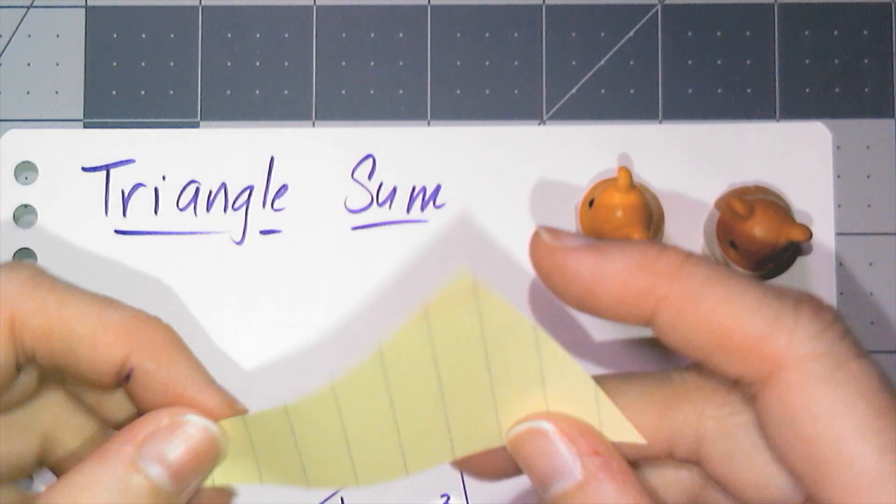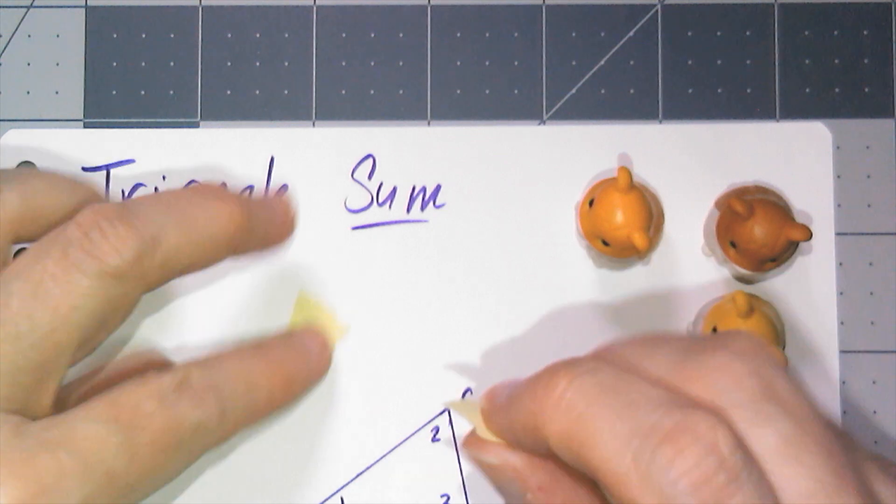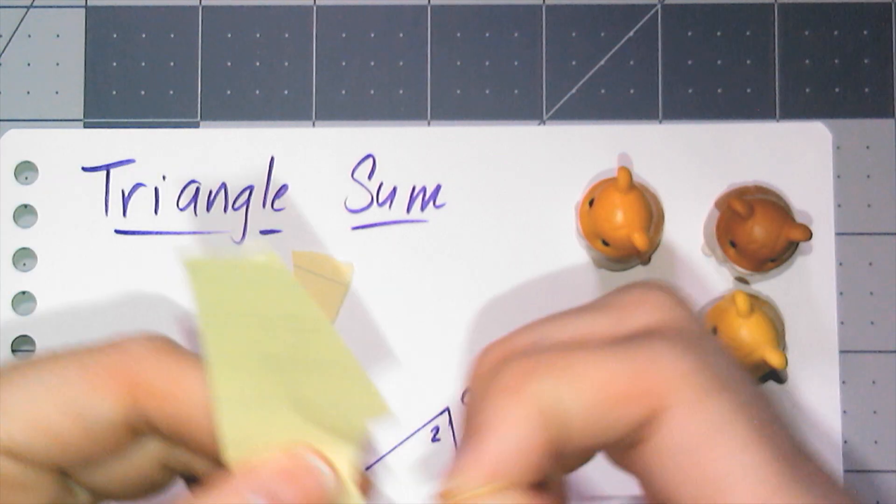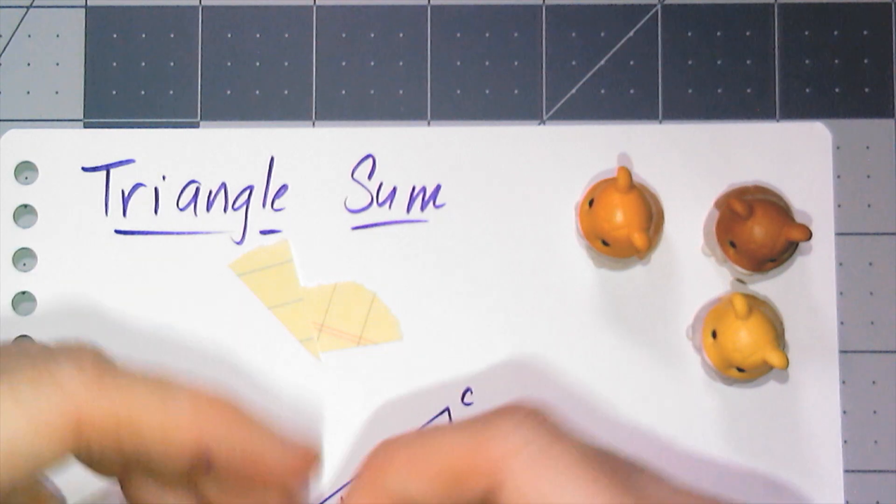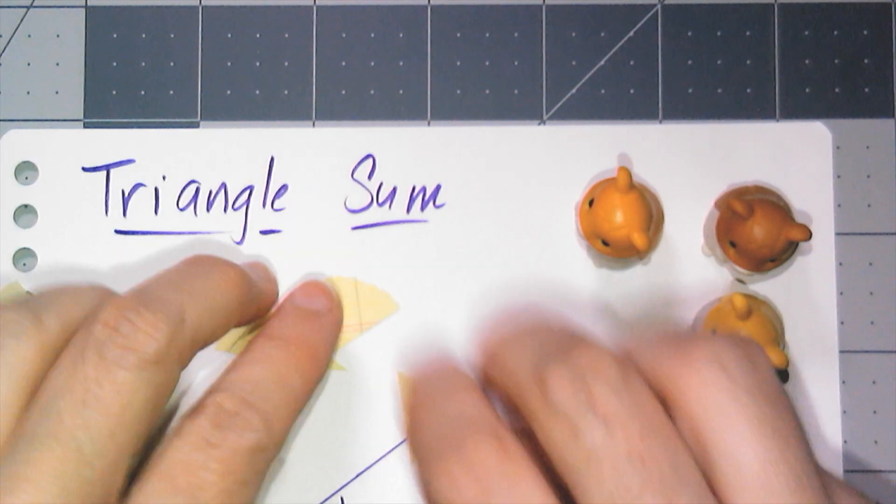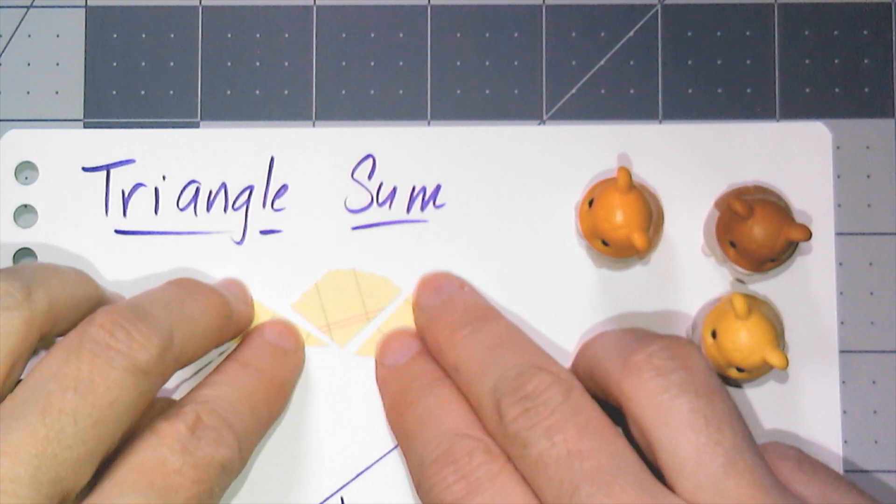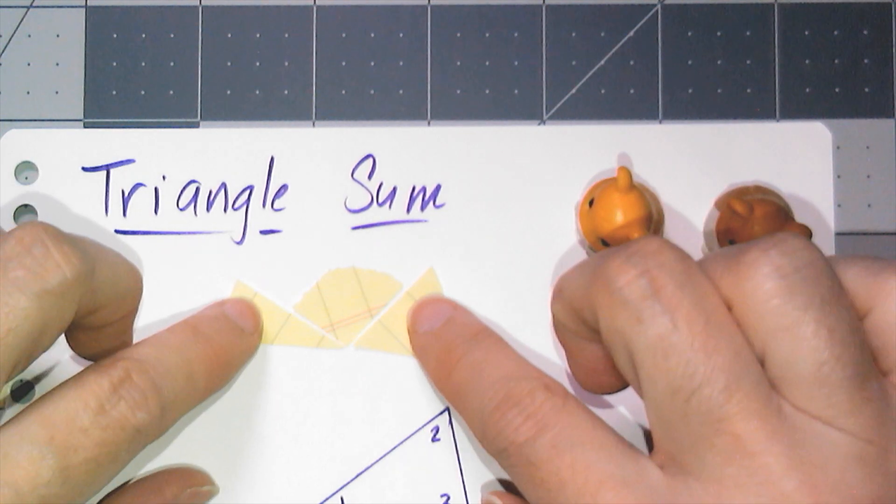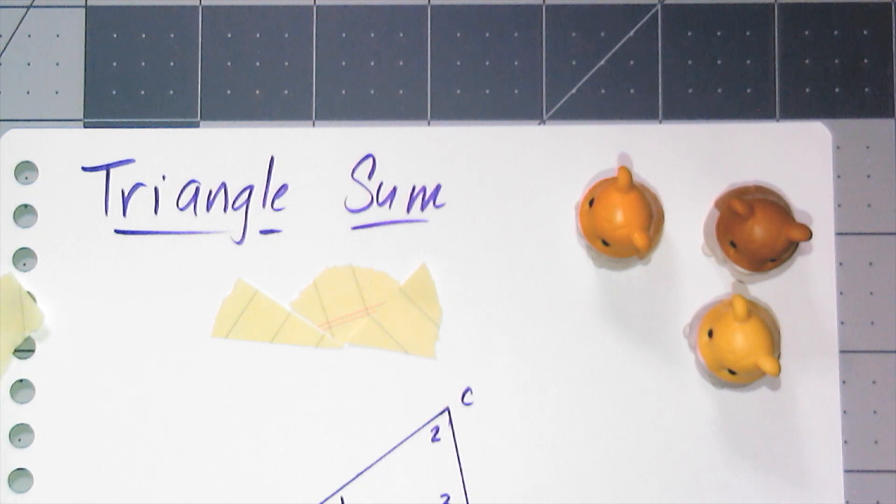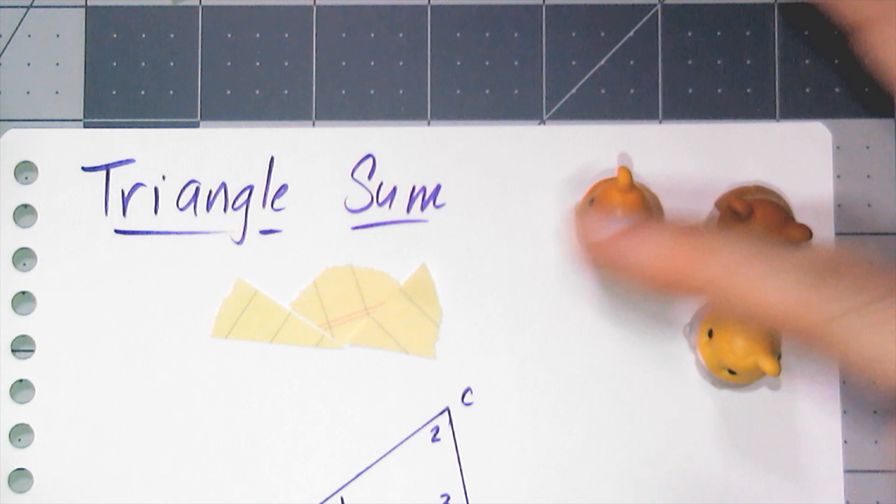There is a quick way to convince people that this is true, by taking any triangle and tearing off the angles. When you line the angles up, you form a straight angle with all three of those angles. So it's a quick way to convince people that the sum of the angles of a triangle have to be 180 degrees. Now that's not a proof though.